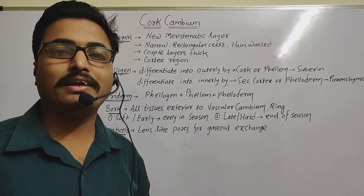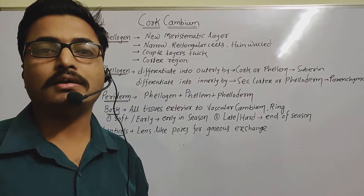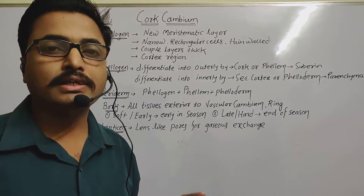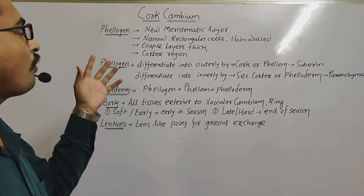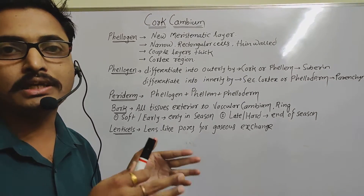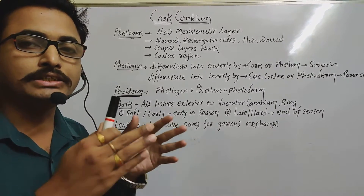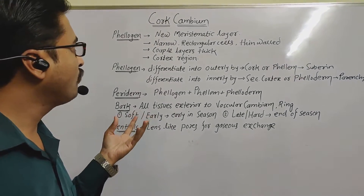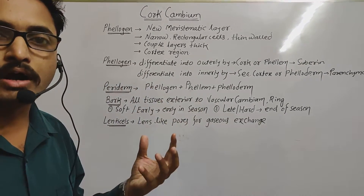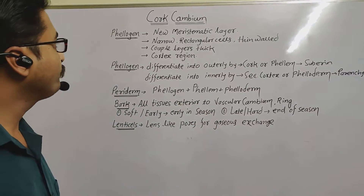Hello students. We are learning about anatomy of flowering plants. In the last session, we completed information about different types of food present inside the plant. Today we will see the basic concepts regarding cork cambium formation. Cork cambium formation mechanism is related to secondary growth in dicot plants. Secondary growth has two main levels: first, increasing girth, and second, formation of cork cambium.